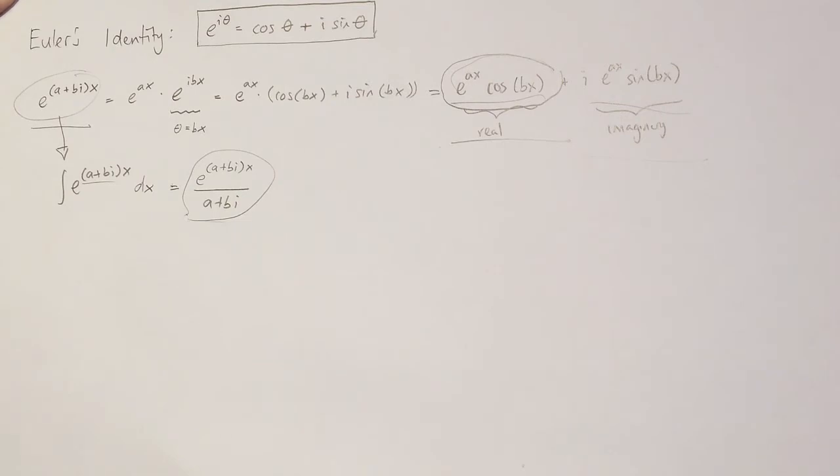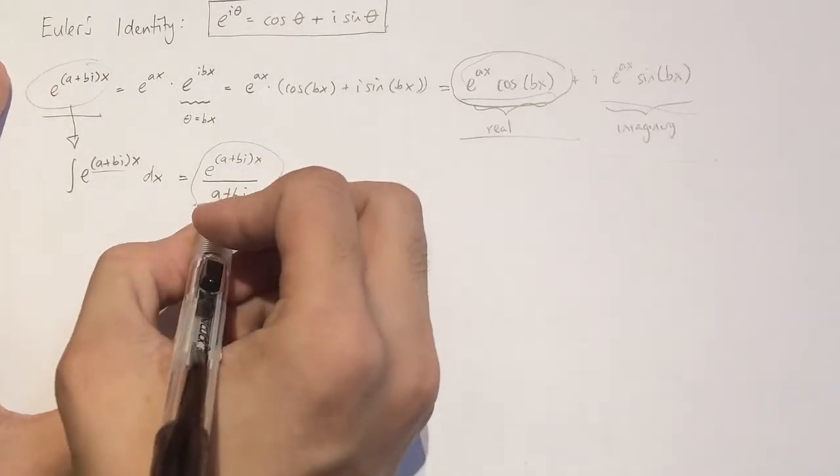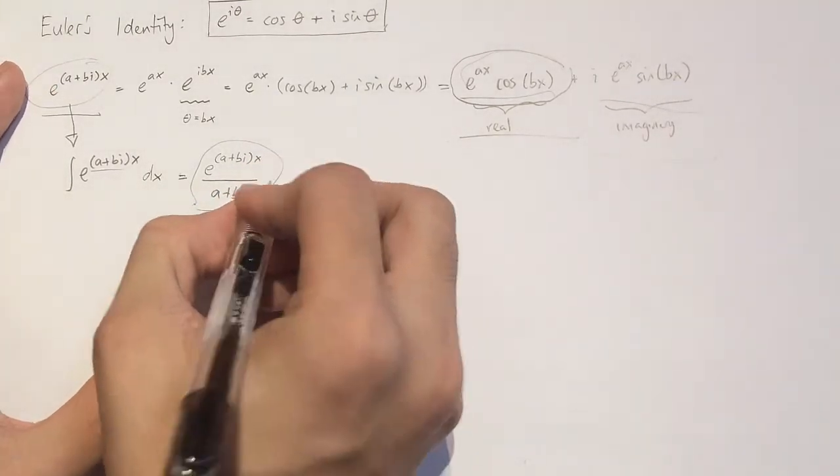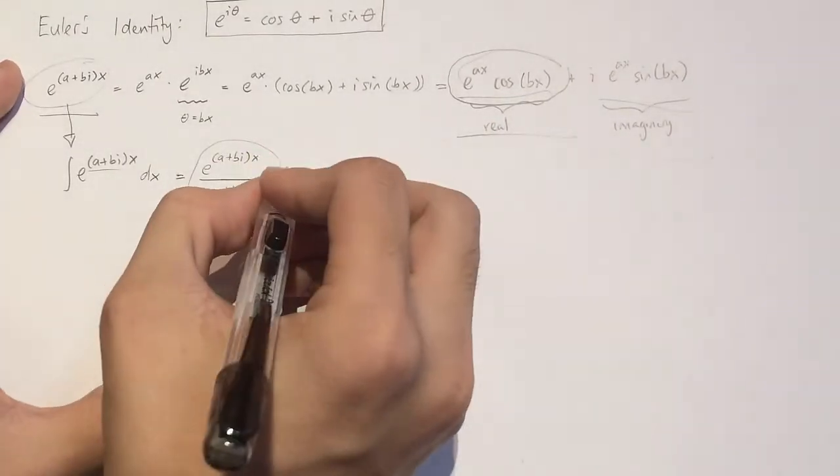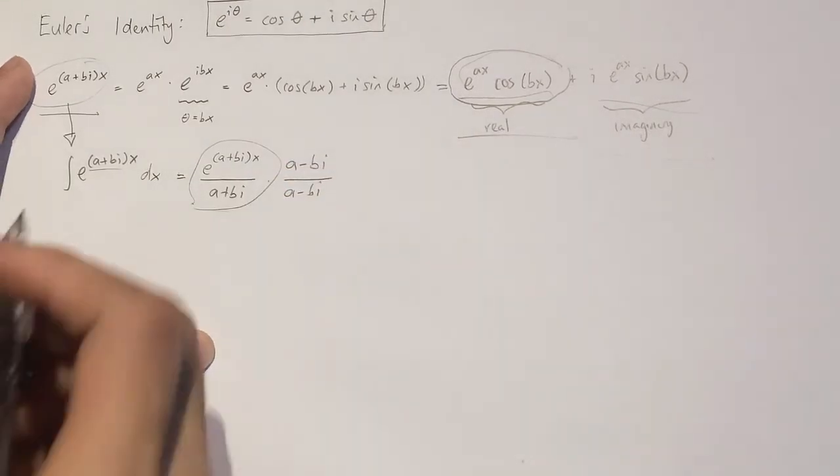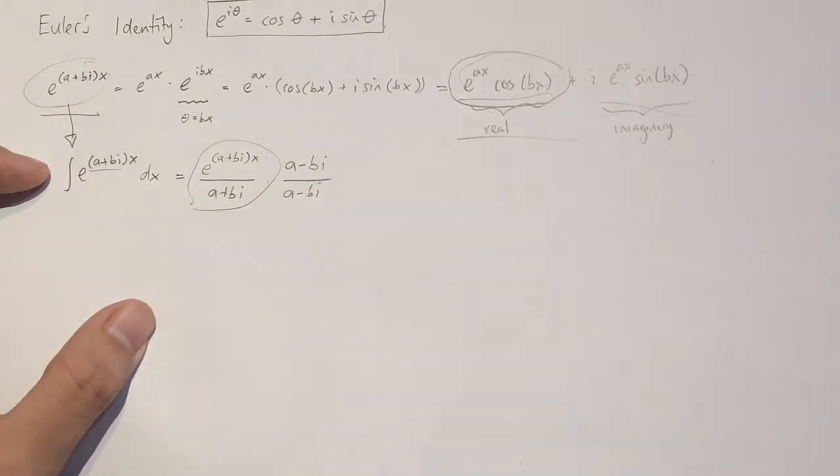So what we're going to do is I'm going to multiply top and bottom of the fraction by something called the conjugate, which is just basically a minus bi. I'm going to do that with the top as well, a minus bi. And what I'm going to do now as well is I'm also going to split this back into two exponentials. So that's a bit easier to deal with.